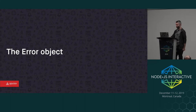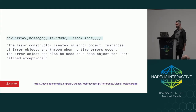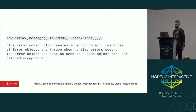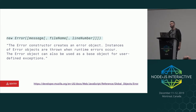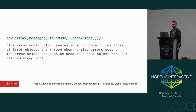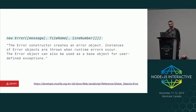So the error object itself — where it all begins. From MDN: the error constructor creates an error object. Instances of error objects are thrown when runtime errors occur. The error object can also be used as a base object for user-defined exceptions. Pretty concise. Really want to focus on that — instances of error objects are thrown when runtime errors occur.